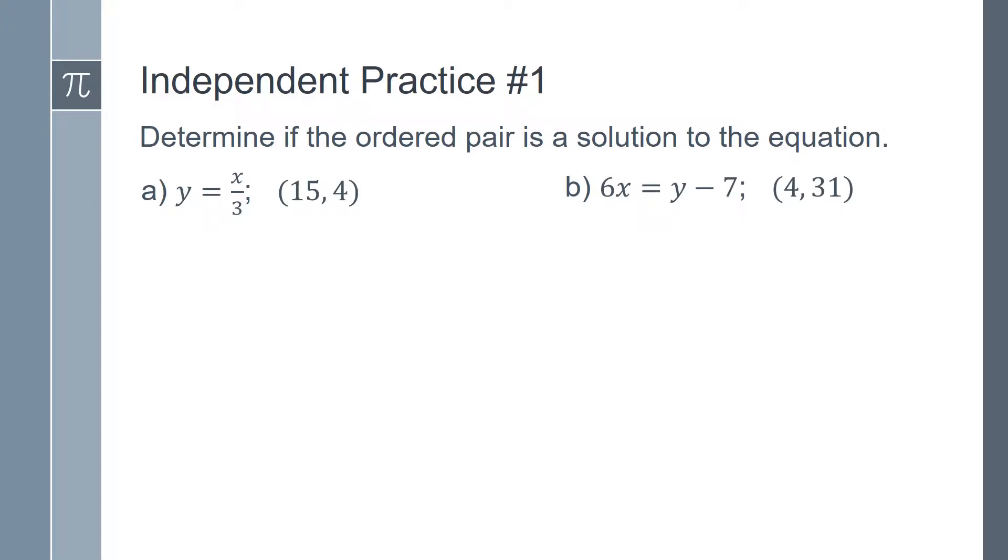Independent Practice Number 1. Determine if the ordered pair is a solution to the equation. Part a: y equals x over 3, when x is 15 and y is 4. Part b: 6x equals y minus 7, when x is 4 and y is 31.